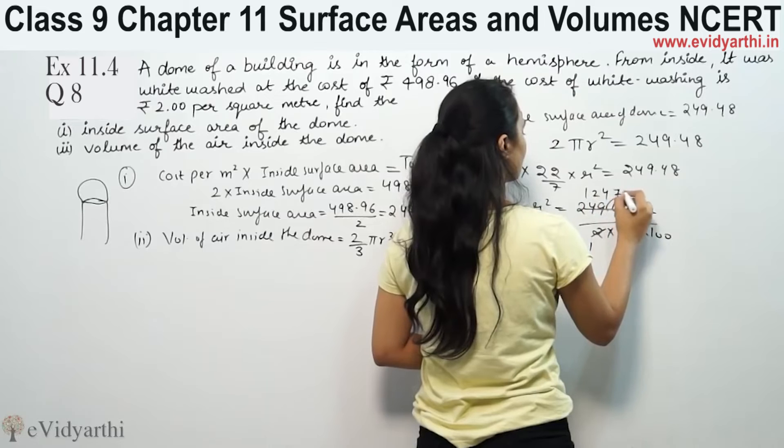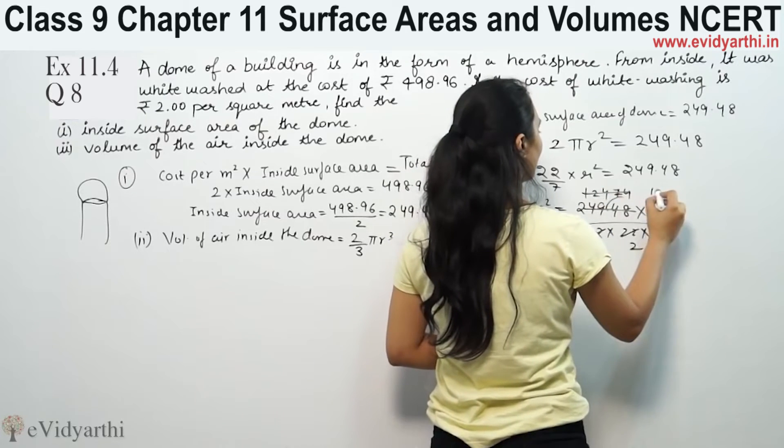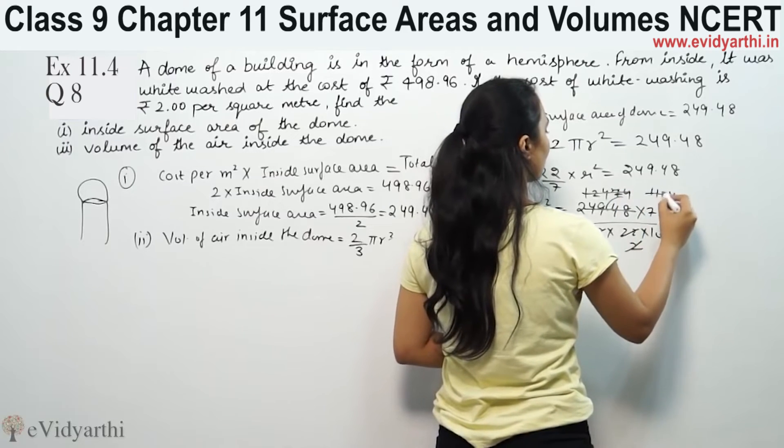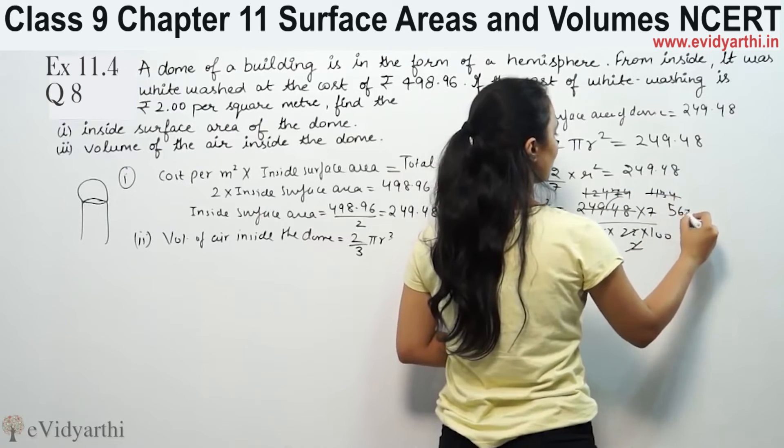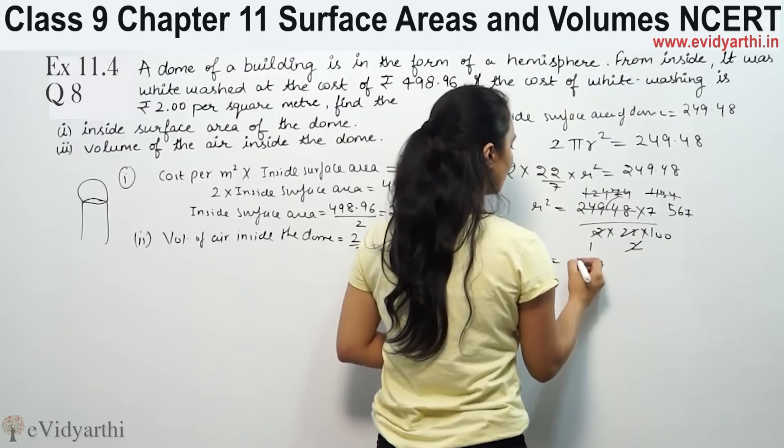Divide by 100. Calculating step by step: 3969 divided by 100.